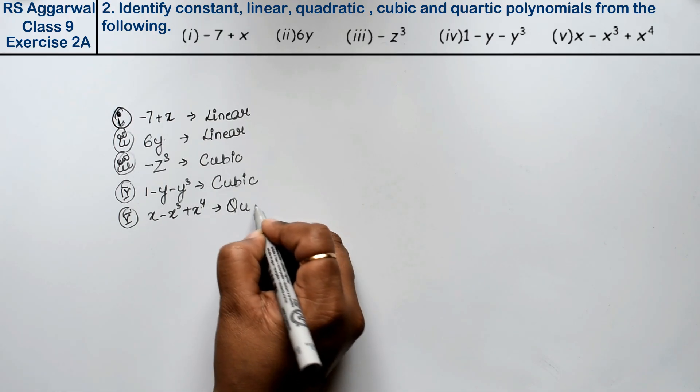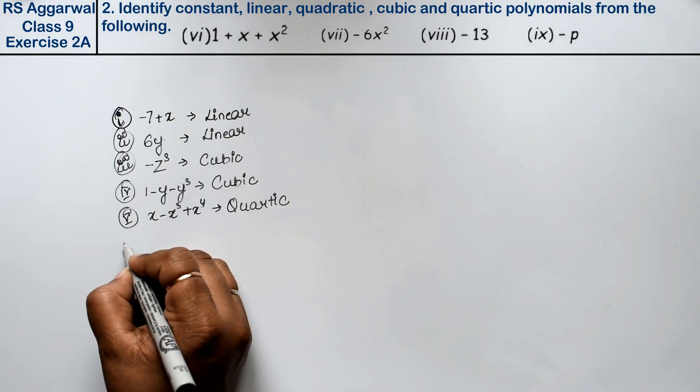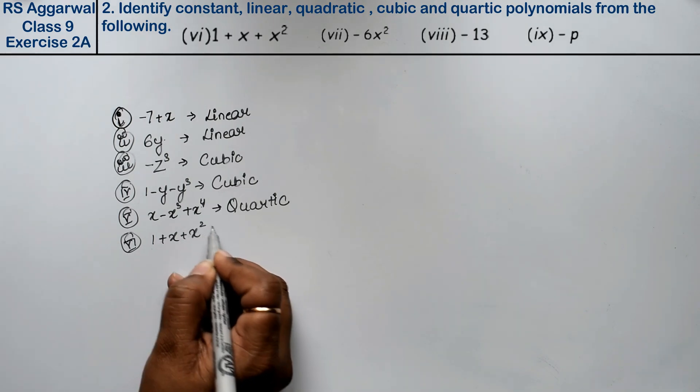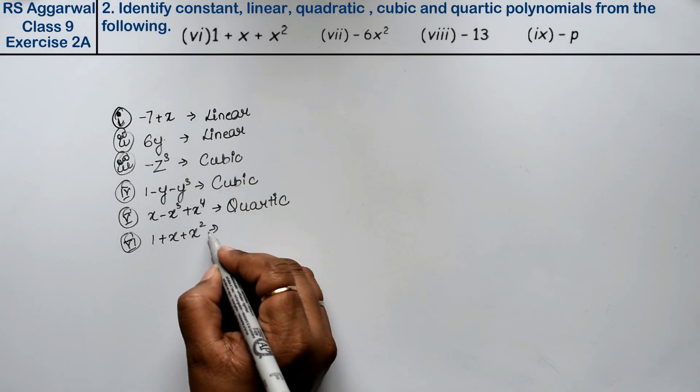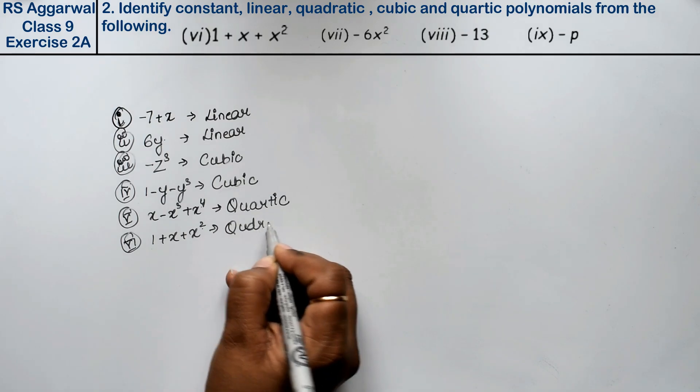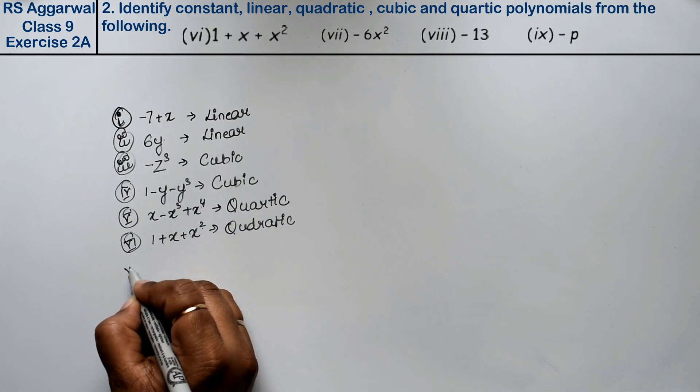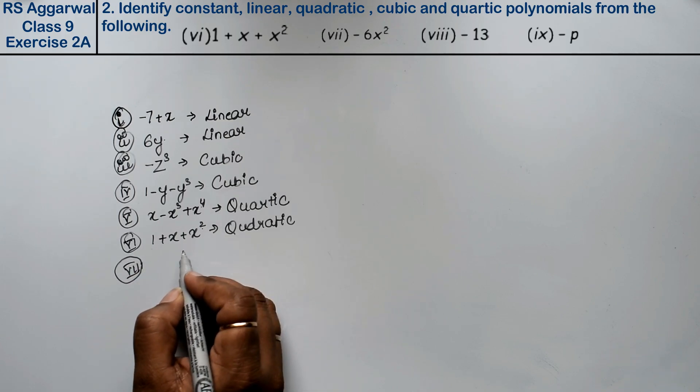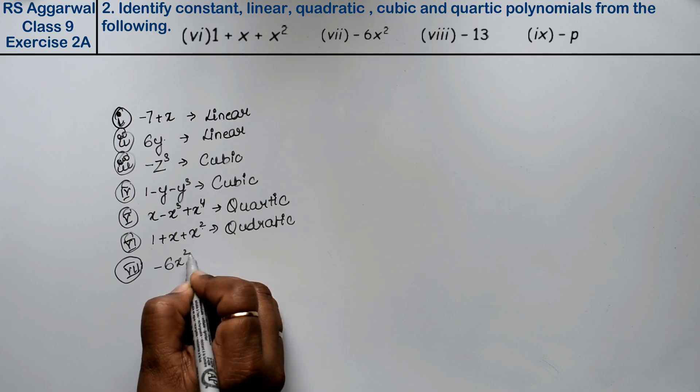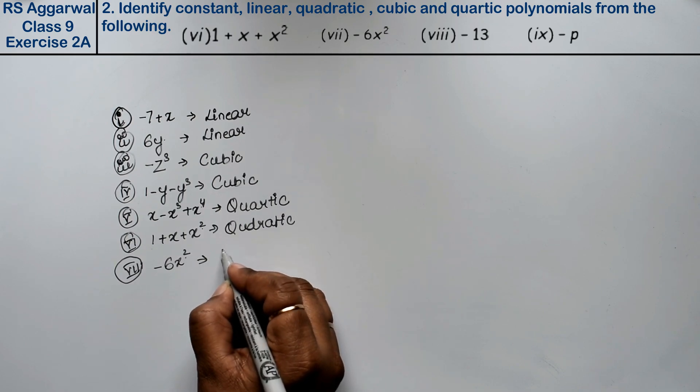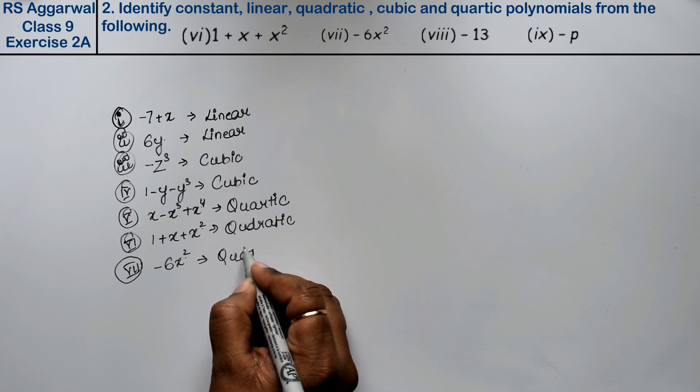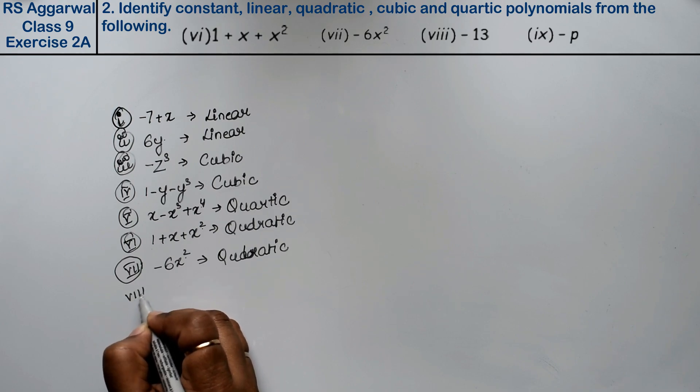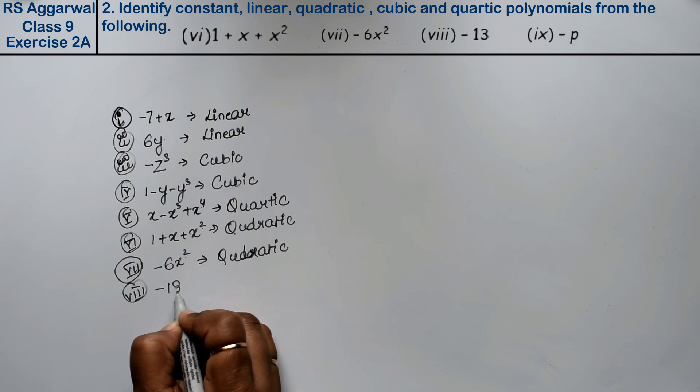Let's do the sixth part. Sixth part is 1 + x + x². Let's do the seventh part. Seventh part is 1 + x². Friends, here the power is 2. What does this become?